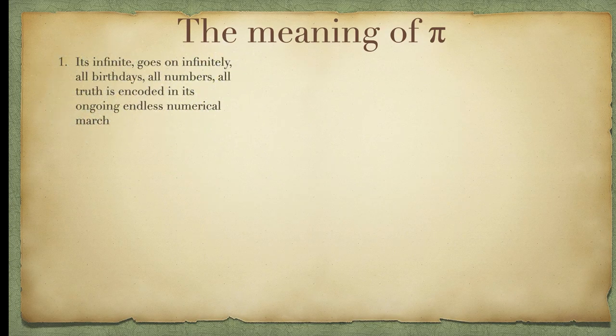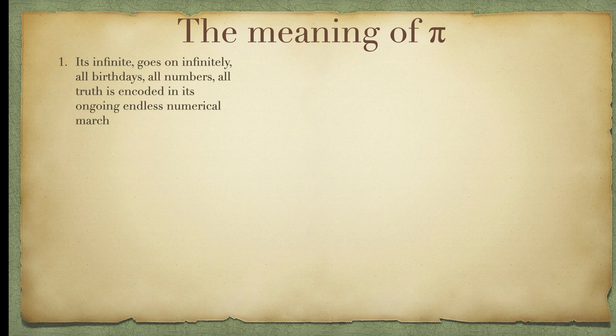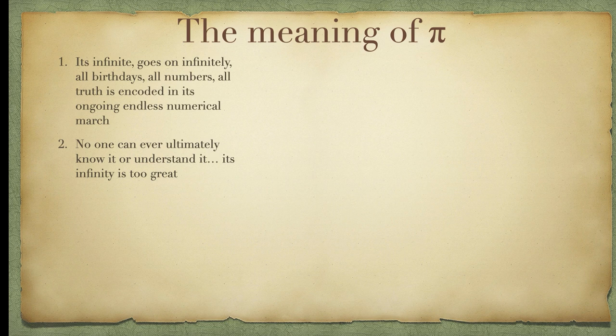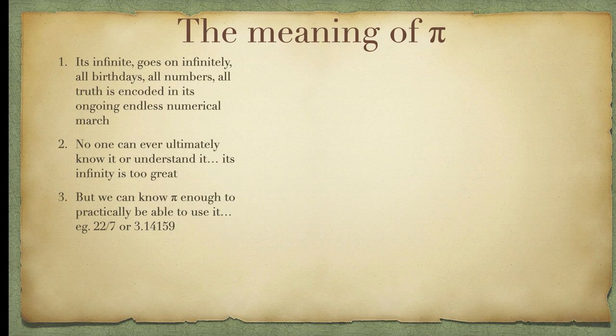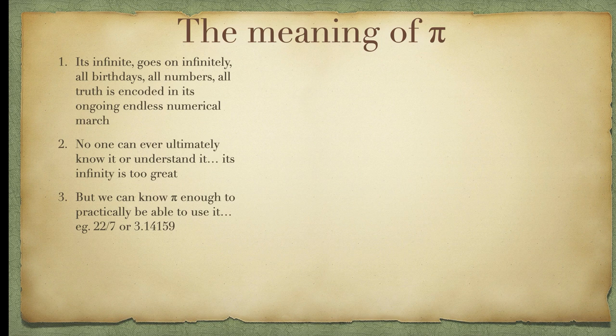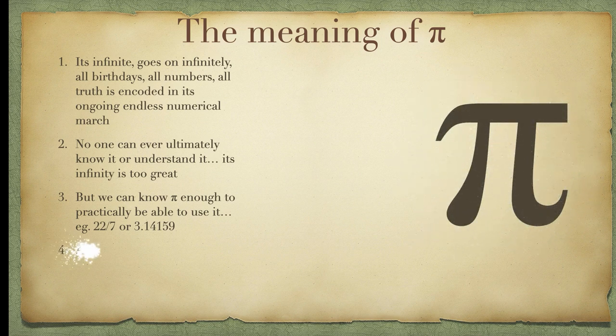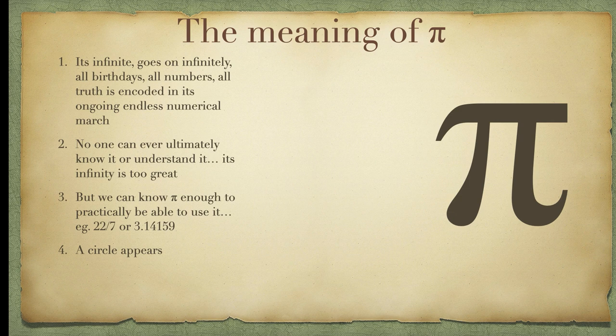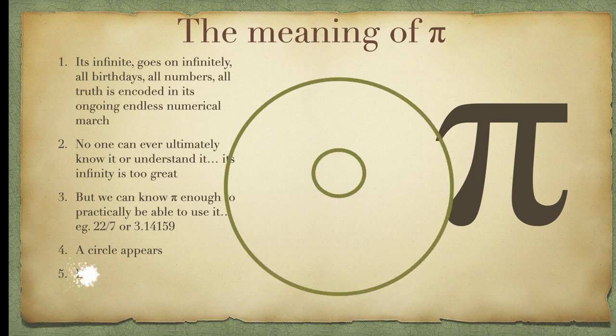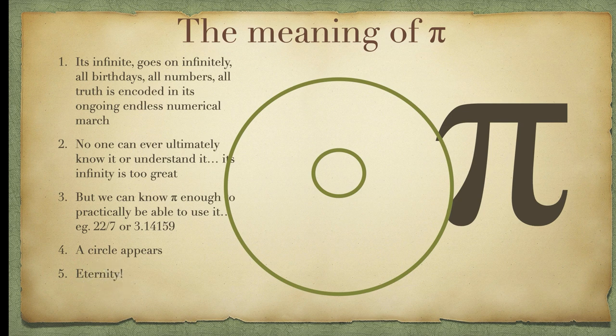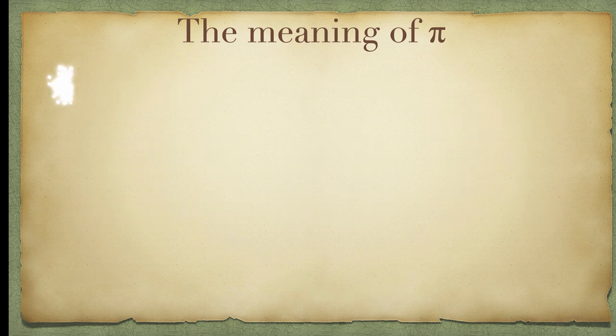All right, so the meaning of Pi. Well, Pi is infinite. It goes on infinitely. All birthdays are in it, I think. All numbers are in it. All truth is encoded in its endless numerical march. No one can ever eventually know it or understand it. It's infinite. It's too great. Although we can practically use it, 22 sevenths, 3.14159, even though it's infinite, it's usable and knowable in that sense. So, a circle appears from Pi. Pi has this magic. It turns a line into a circle. Eternity. Powerful. Circles from Pi.